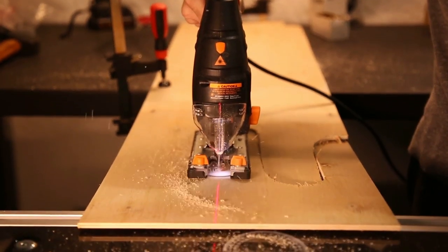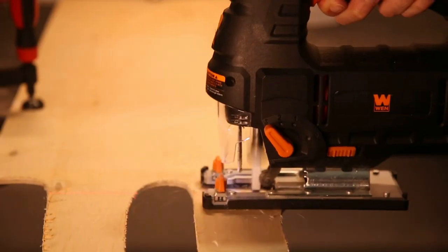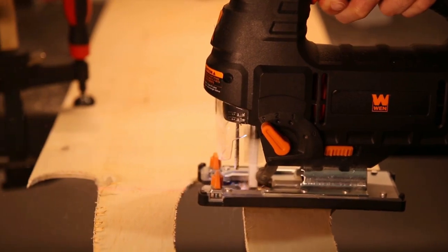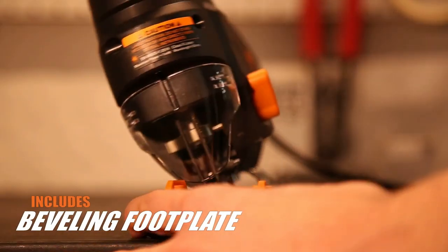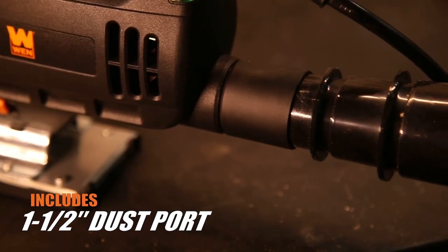Simply turn the knob to change the stroke from vertical to orbital, creating a pendulum effect with the saw's blade. Easily bevel the bottom foul plate up to 45 degrees in either direction for angled cuts in your workpiece.